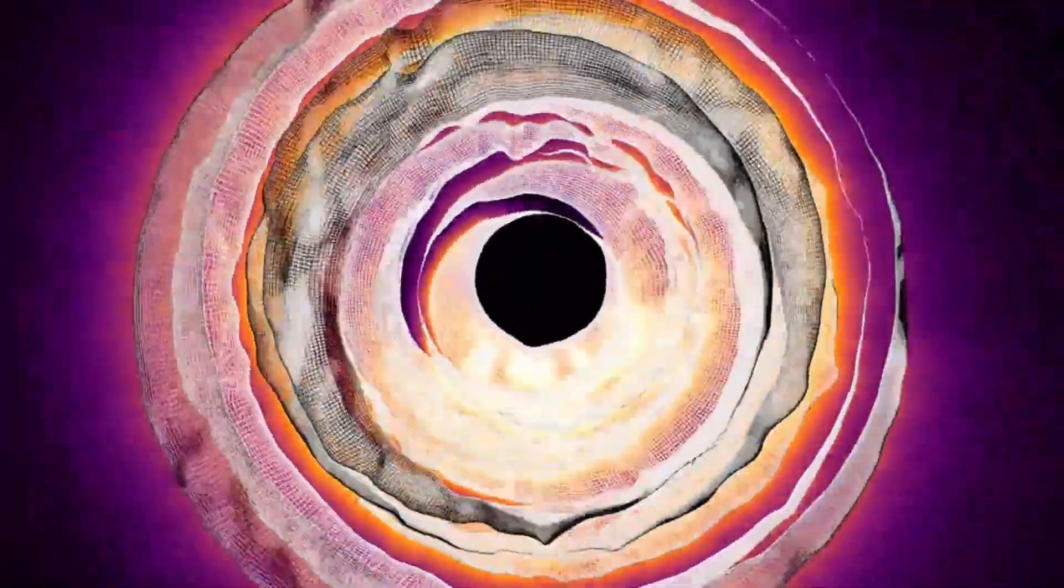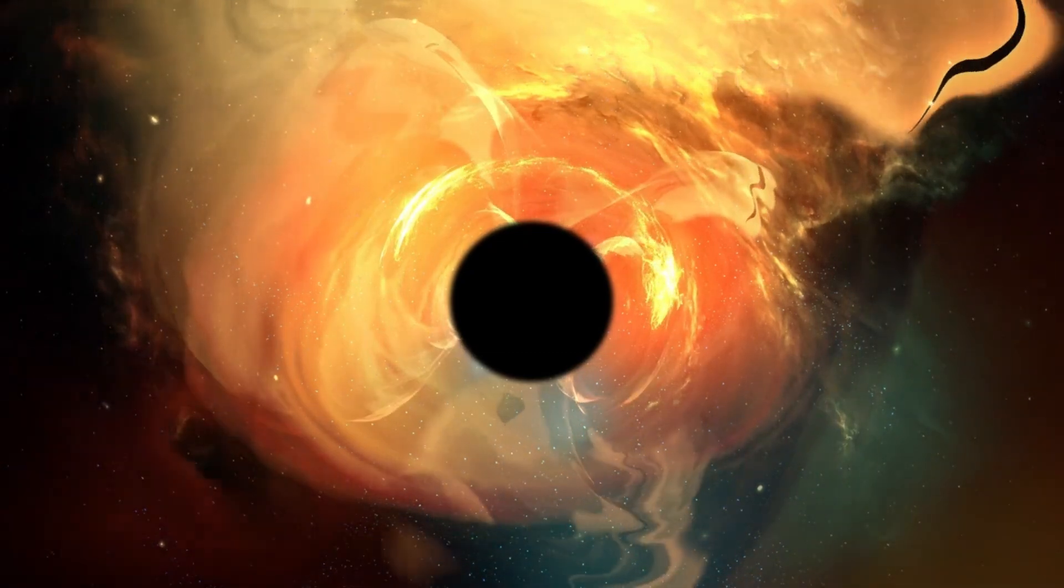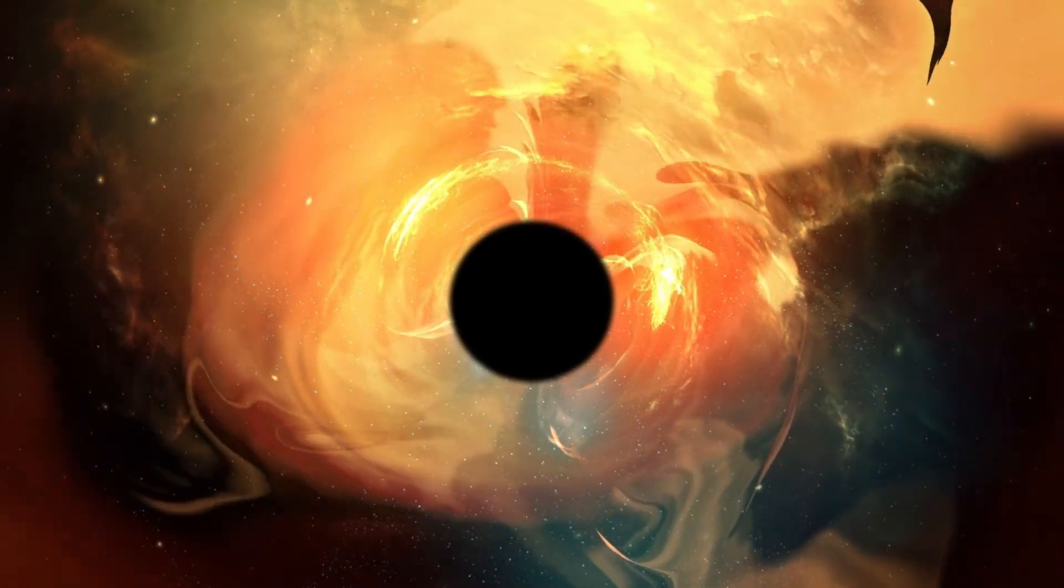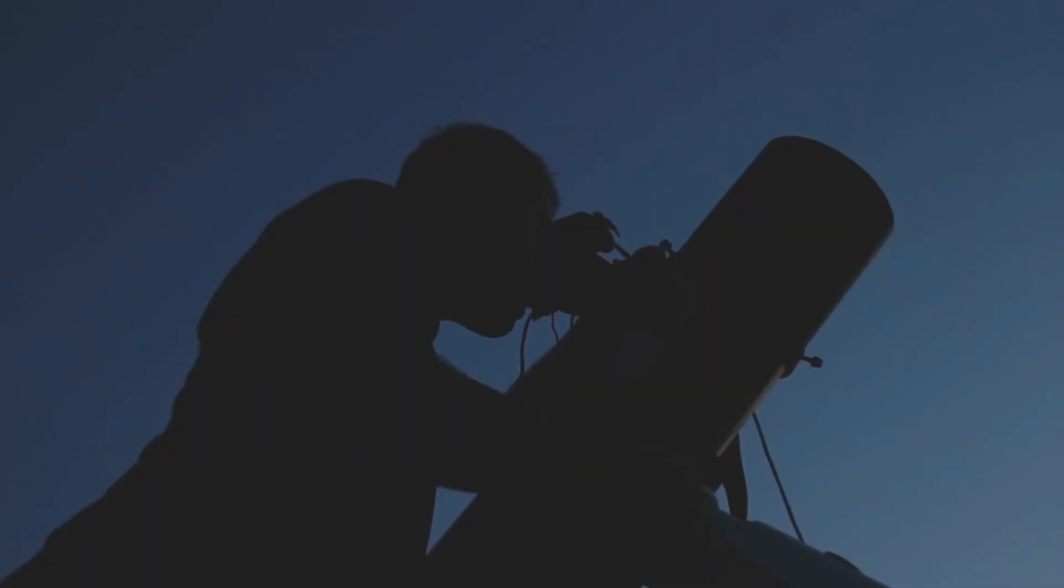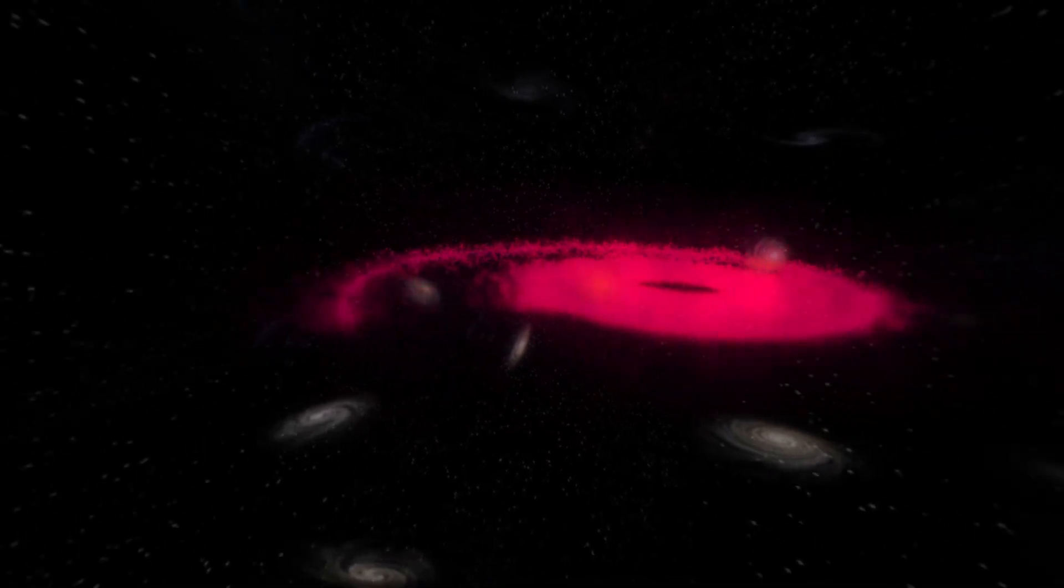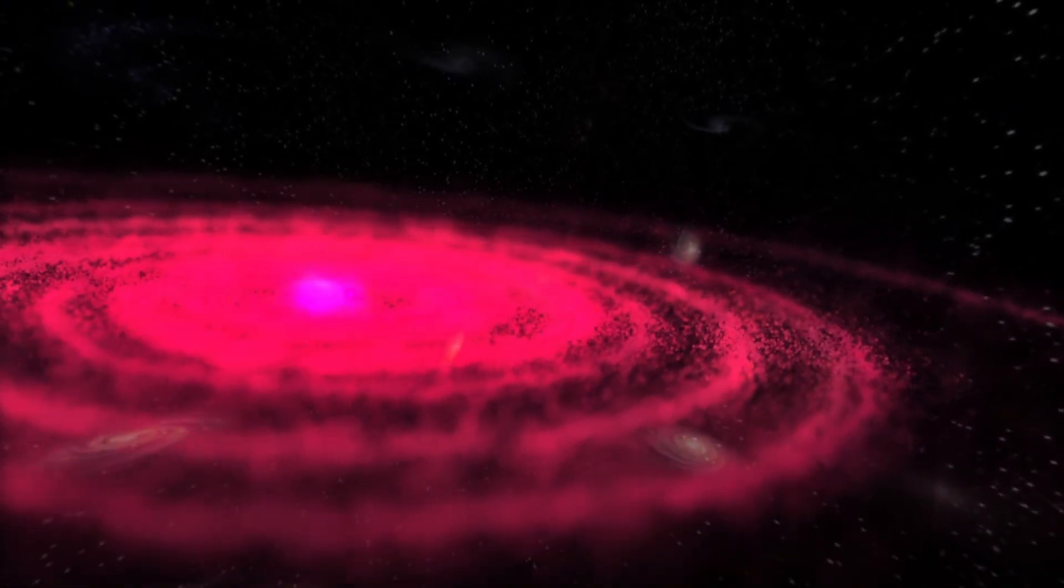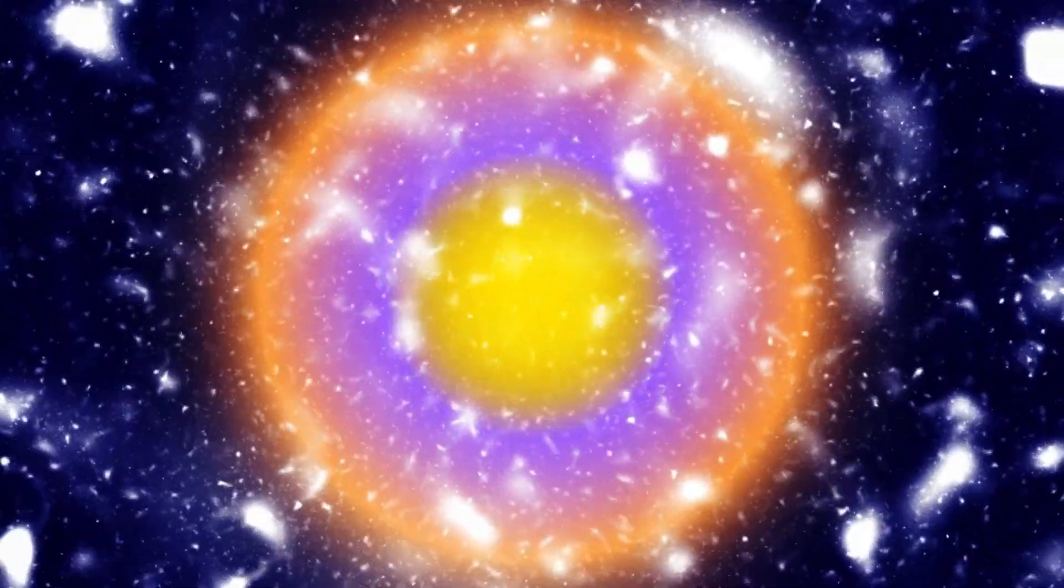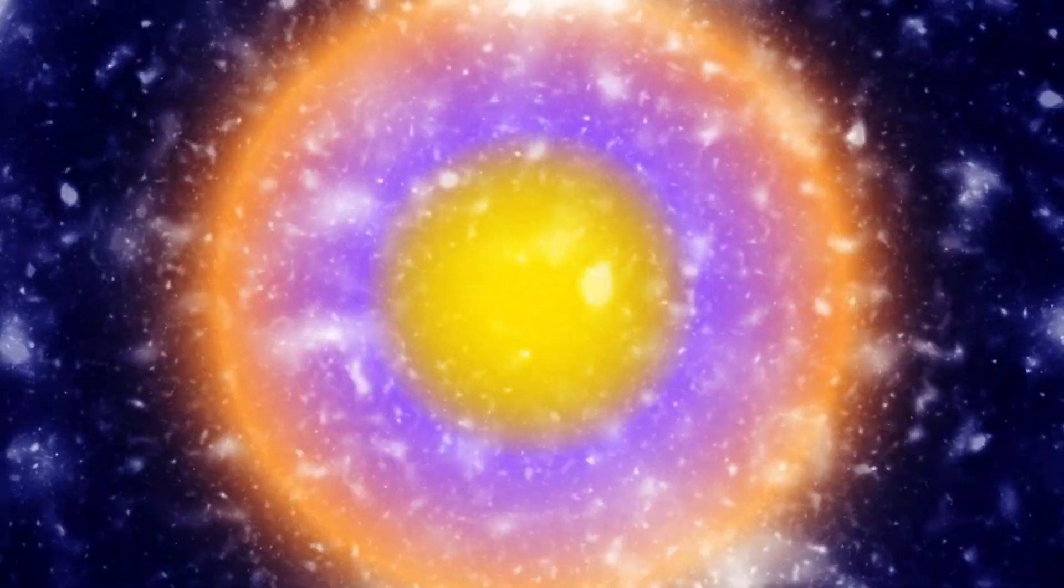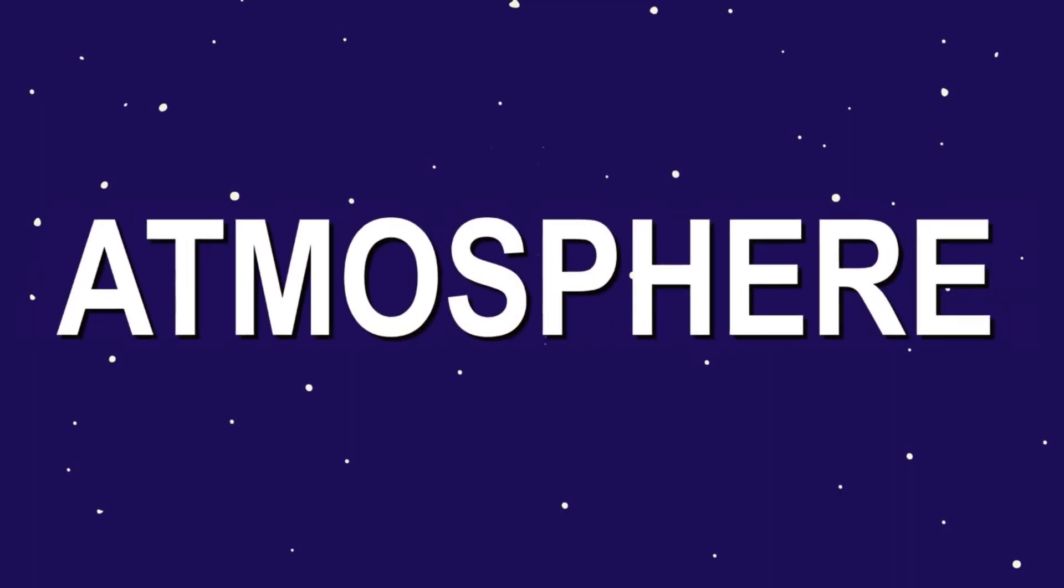How is this black hole eating so much without choking on its own radiation? Some scientists are proposing exotic ideas to explain it. Maybe the Eddington limit isn't as strict as we thought. In the early universe, the conditions were so different, denser, hotter, with fewer heavy elements, that maybe black holes could feed in ways we haven't modeled yet. Another idea is that the black hole isn't actually breaking the Eddington limit. Maybe it's just appearing to, because of some weird geometry in its accretion disk. Like, if the disk is puffed up or clumpy, it could let more material flow in without being blasted away by radiation. These are all just guesses for now. But they're the kind of guesses that keep astronomers up at night.